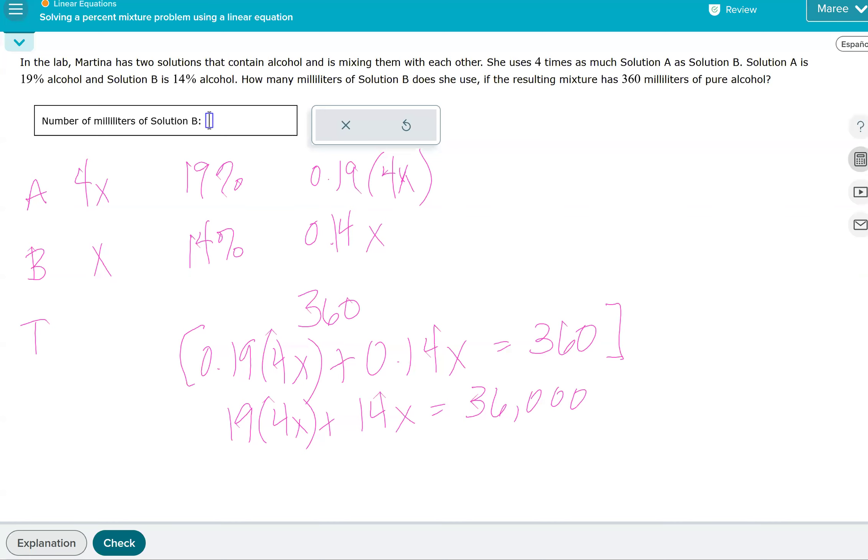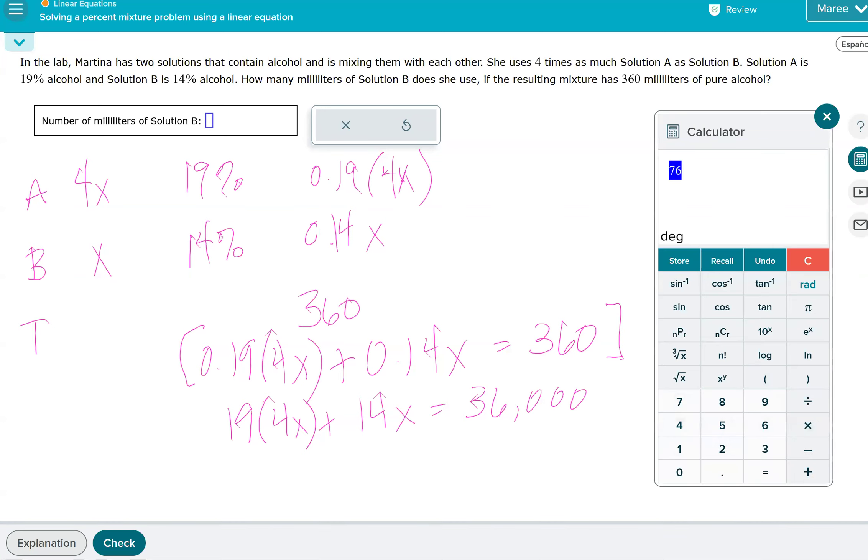So let's just do some real quick calculations here. What's 19 times 4? We have 76. So we have 76X plus 14X and that has to equal 36,000. So then 76 plus 14 is 90. So we have 90X equals 36,000, and we'll divide 36,000 by 90.